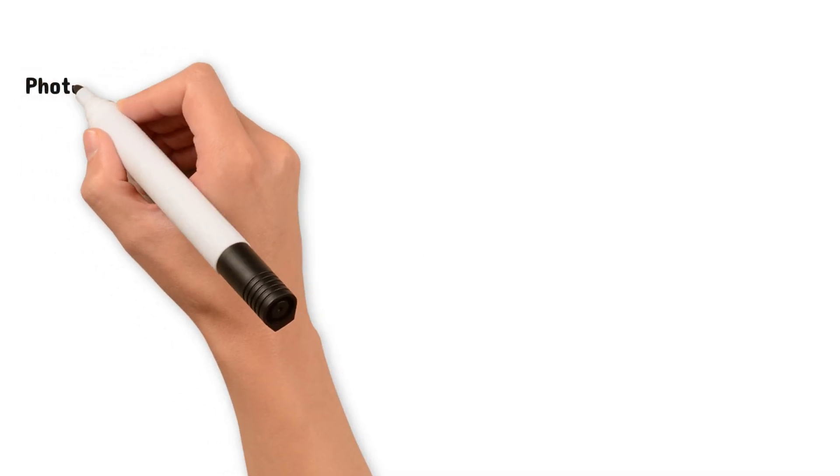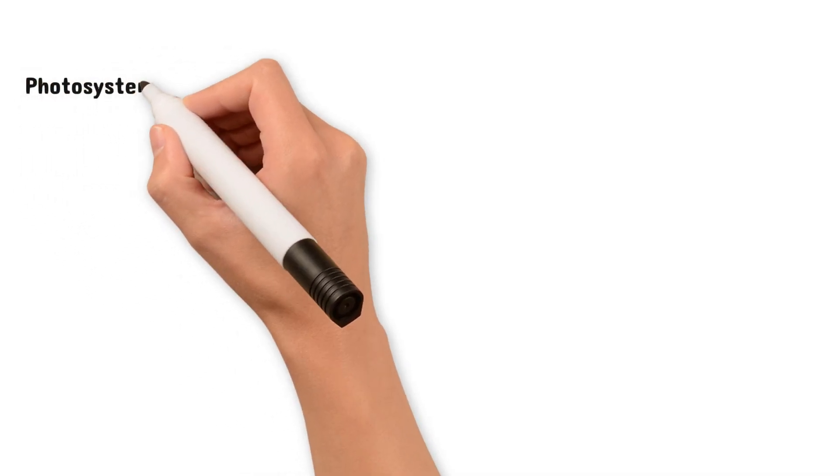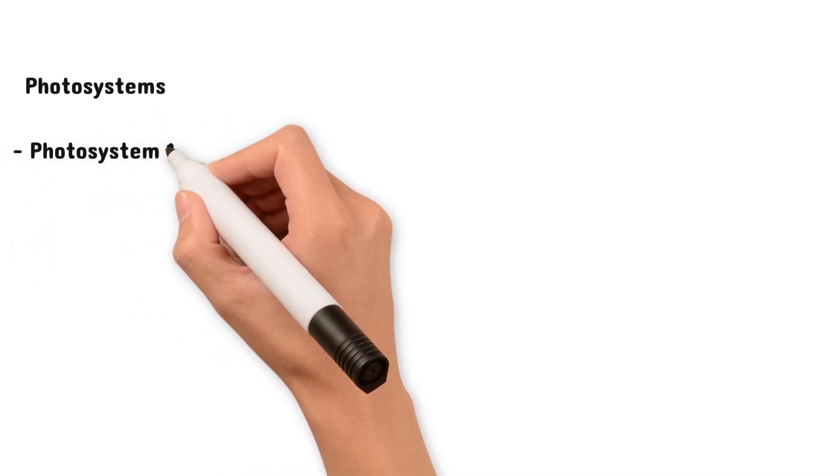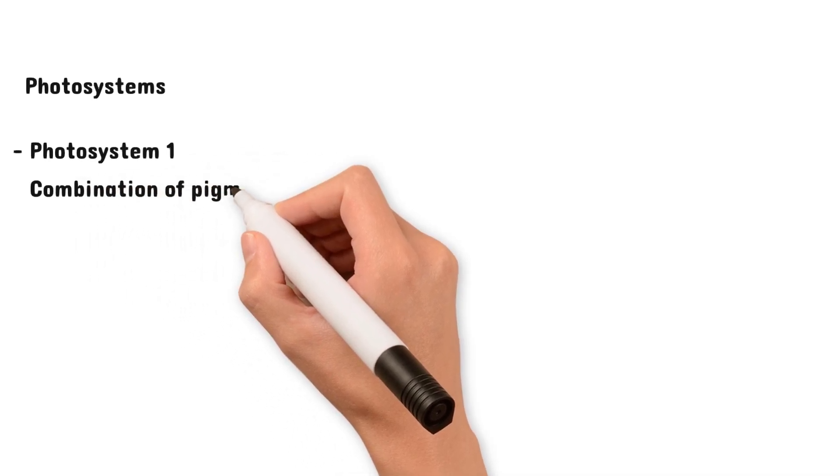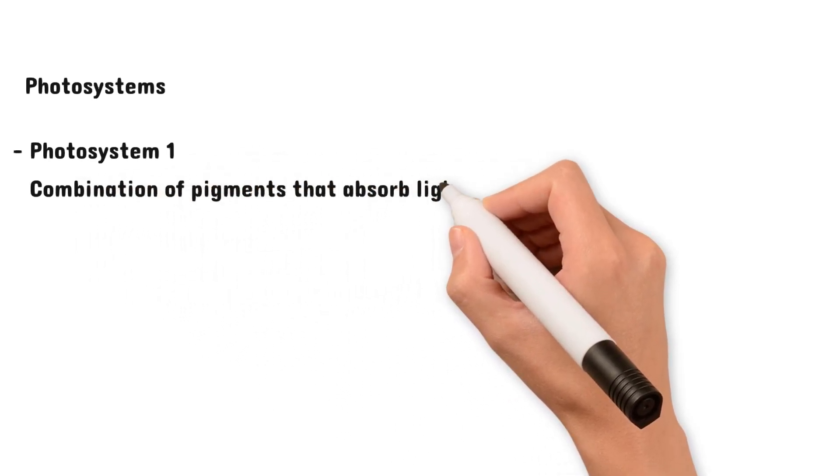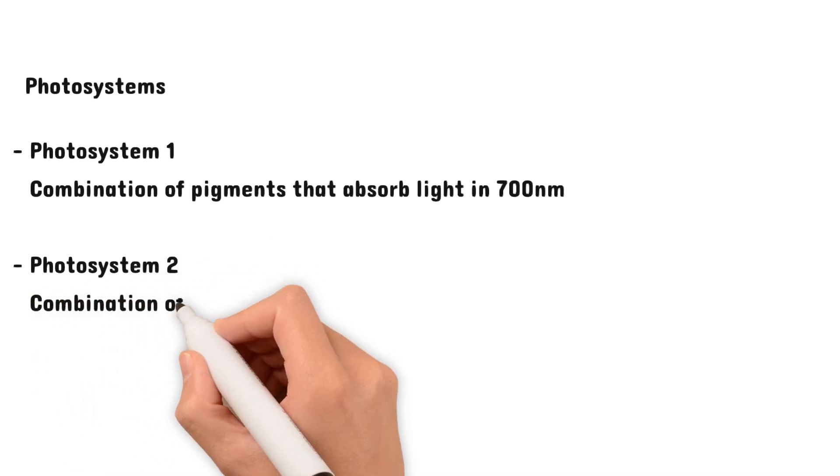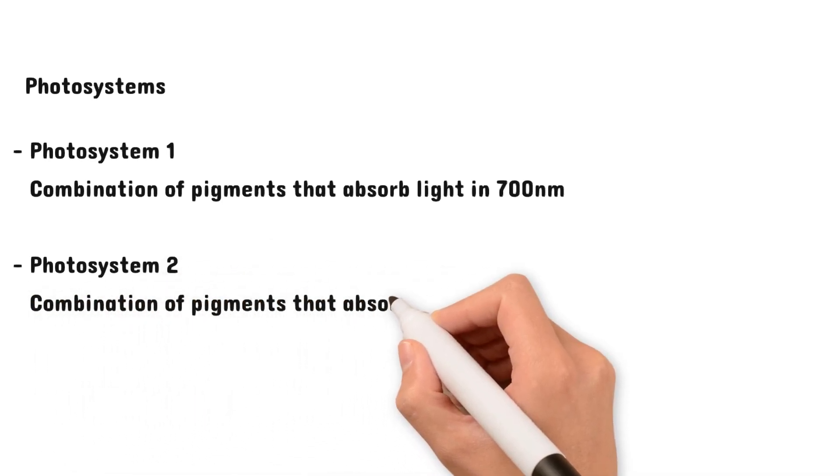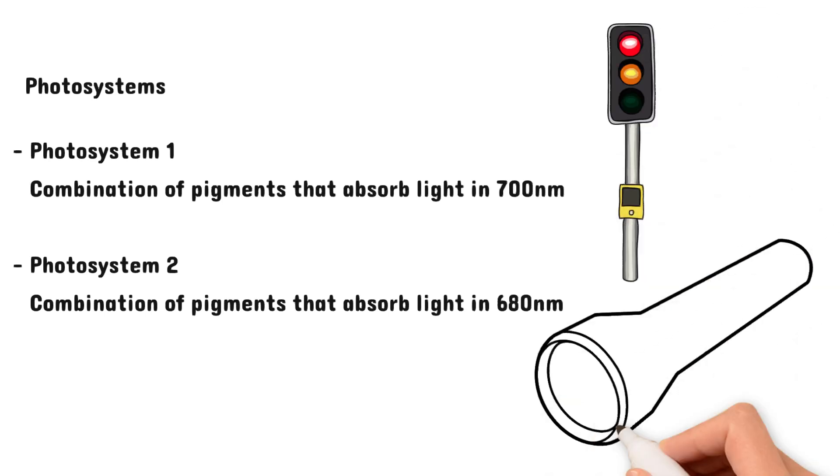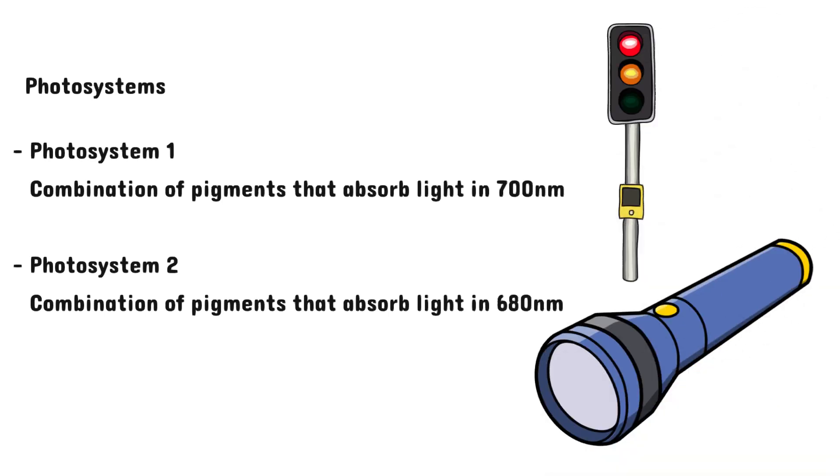Lastly, let's introduce the idea of photosystems. We have photosystem 1 and photosystem 2. Photosystem 1 is a combination of pigments that absorbs light with wavelength 700 nanometers, and photosystem 2 is a combination of pigments that absorbs light with wavelength 680 nanometers. But more on this in the next topic.